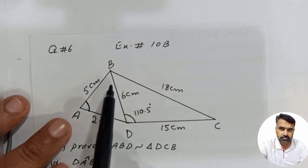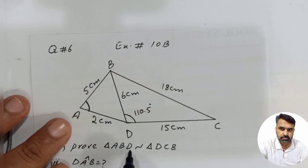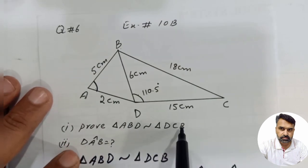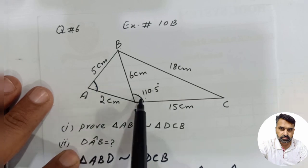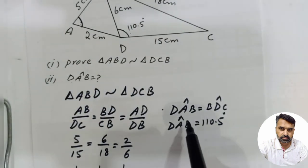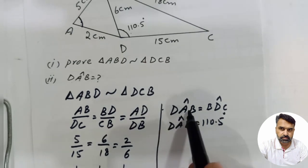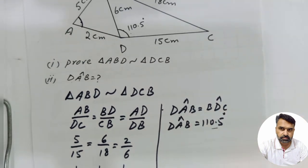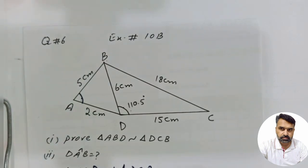Because the triangles are similar, angle DAB equals angle BDC and angle BDC value is 110.5 degrees, and we have found it. So this is question number 6 exercise 10B of New Syllabus Mathematics 3. May Allah always have a wish for you and have a good job.